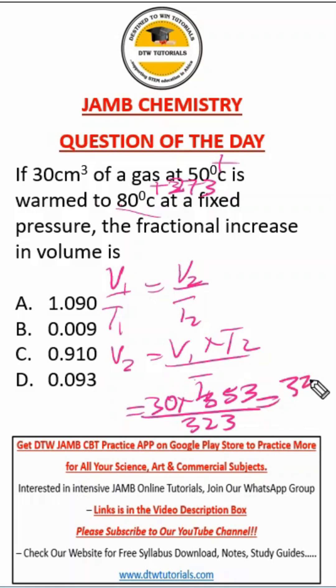Please use your JAMB calculator. Now we don't stop here - we're looking for the fractional increase in volume, which is the new volume minus the old volume divided by the old volume. This gives us option D.